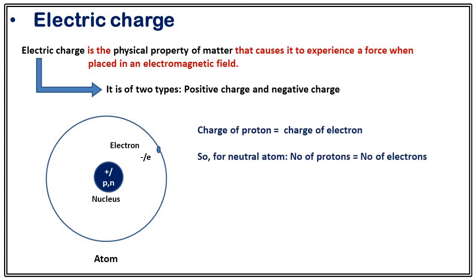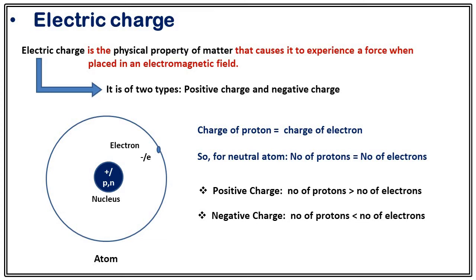Protons are positively charged and electrons are negatively charged. The charge on a proton is exactly equal to the charge on an electron. So in a neutral atom, the number of protons always equals the number of electrons. If some body is positively charged, it means it has an excess number of protons compared to electrons. Positively charged means protons outnumber electrons; negatively charged means electrons outnumber protons.